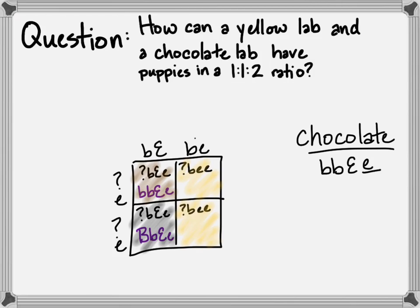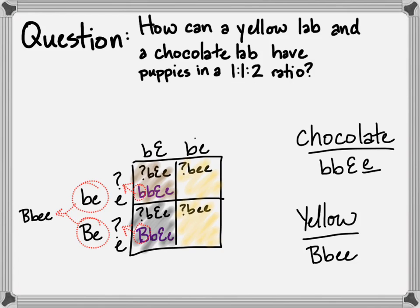And then just work backwards. So that must be the b that matches the possible gamete. So we have a lowercase b and an e, and an uppercase b and a lowercase e. And combine those back together into a parent genotype, and there is the genotype of our yellow lab.